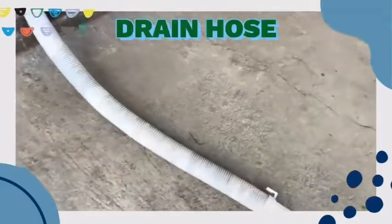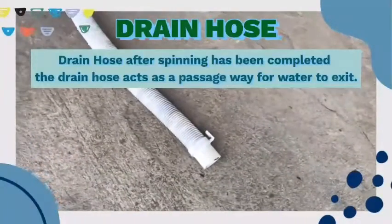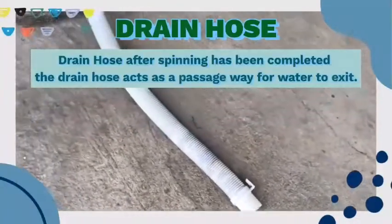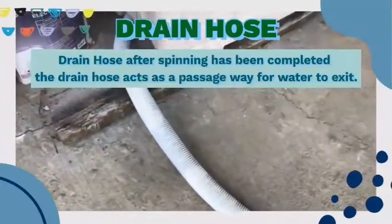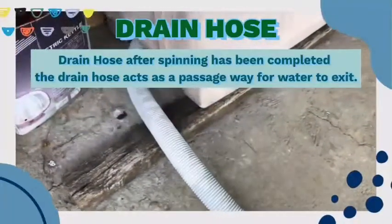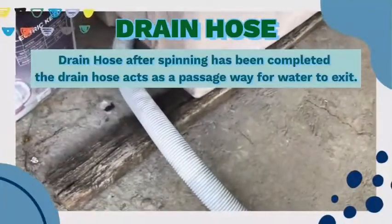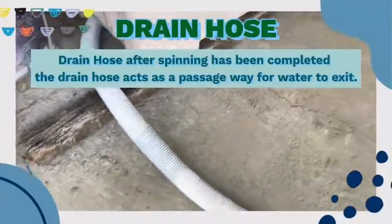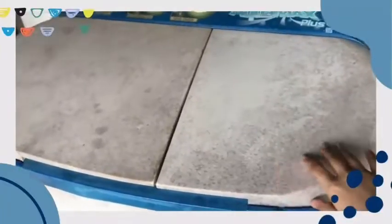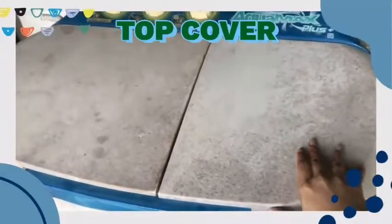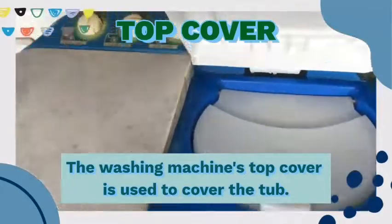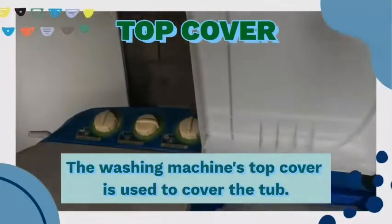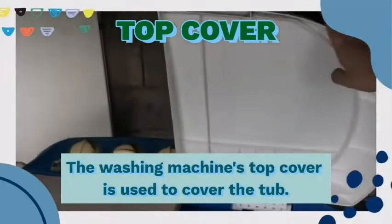Drain hose: after cleaning has been completed, the drain hose acts as a passageway for water to exit. Top cover: the washing machine's top cover is used to cover the top.